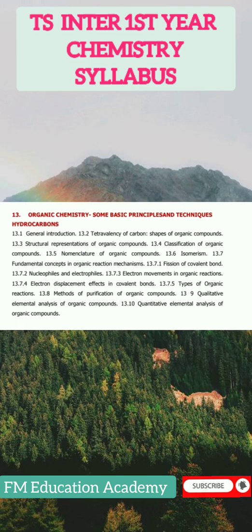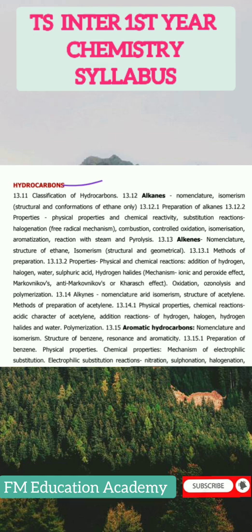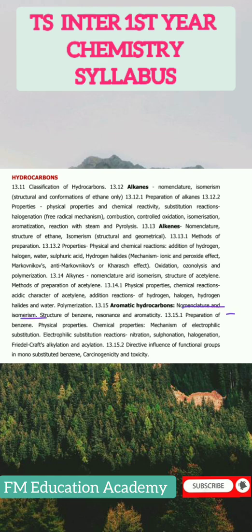The thirteenth chapter is Organic Chemistry: Some Basic Principles and Techniques, and Hydrocarbons. Topics begin at 13.1 General Introduction, tetravalency of carbon, shapes of organic compounds, structural representation of organic compounds, through to 13.1 qualitative elemental analysis. Hydrocarbons include 13.11 classification of hydrocarbons, alkanes, alkenes, isomerism, 13.15 aromatic hydrocarbons, nomenclature and isomerism, structure of benzene, resonance and aromaticity, the directive influence of functional groups in monosubstituted benzene, and carcinogenicity and toxicity.